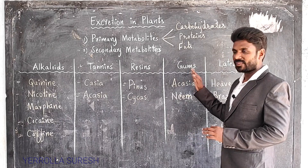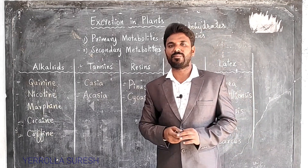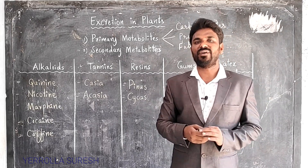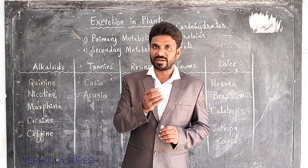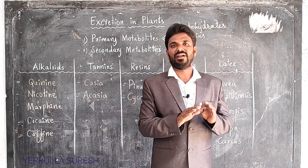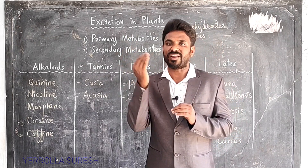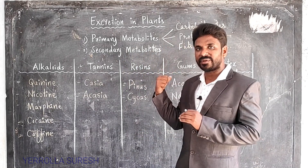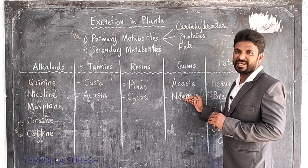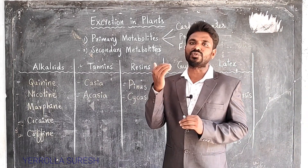Next, gums. Gums are also secondary metabolites. Gums generally absorb water, swell, and help in healing the injured portion of the plant body. When any part is injured, some gum is secreted. The gum absorbs water and swells, preventing the entry of microorganisms, dust particles, or any foreign material into the plant body. Examples are Acacia and neem. The gum extracted from these plants is used as a binding agent or adhesive.